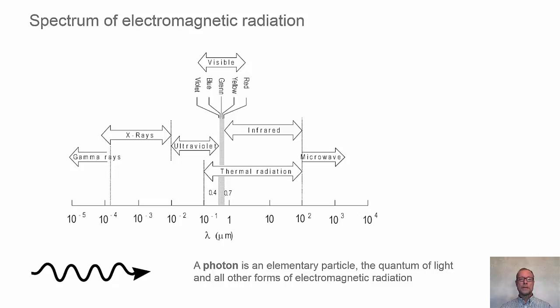Electromagnetic radiation can appear as both waves or photons, like elementary particles, quantum of light.